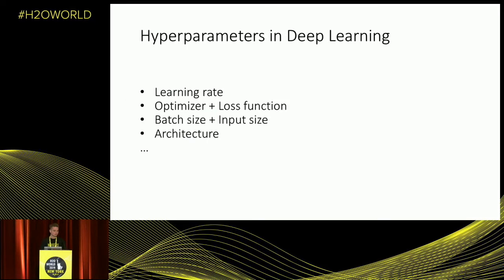What is the issue with building automatic models for deep learning? First of all, there are a large number of hyperparameters that are crucial to training and that also depend on your data. These include learning rate, selecting the optimizer, the loss function, batch size, input size, architecture of the neural network, and so on.